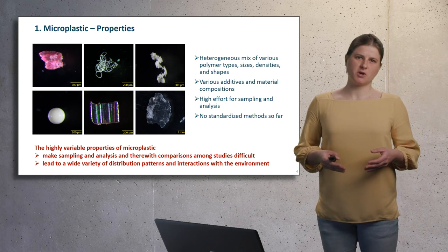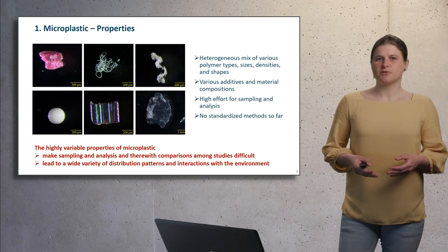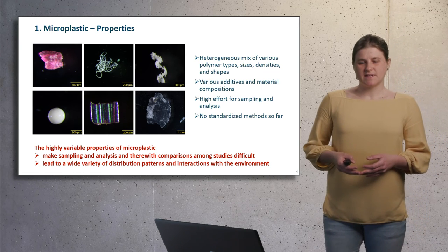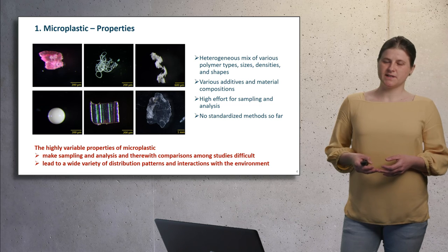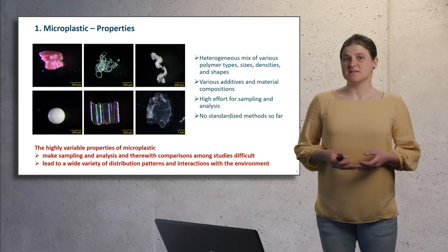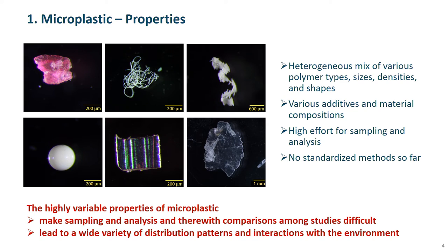Microplastic constitutes not only a single material with defined properties, but a diverse mix of items differing in polymer type, density, shape, size and chemical composition. Moreover, the efforts and costs for sampling, sample analysis and sample preparation are still high and require chemical characterization with advanced technologies. The highly variable properties of microplastics and the lack of standardized methods make sampling and analysis and comparisons among studies difficult, and lead to a wide variety of distribution in the environment and interactions of microplastics with the environment and organisms.